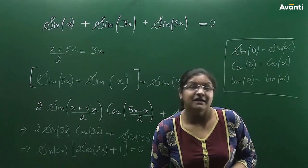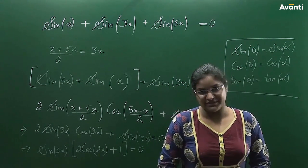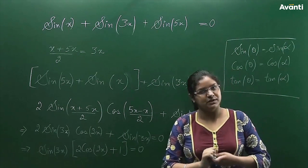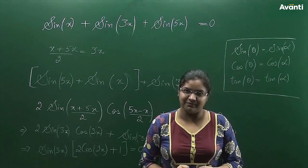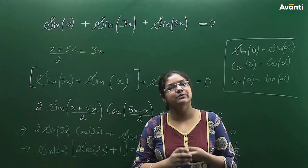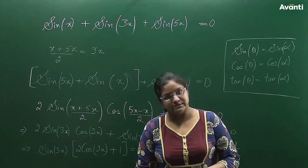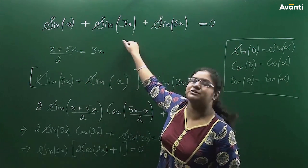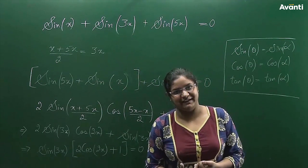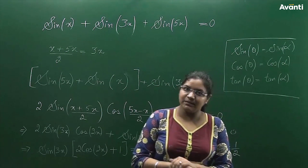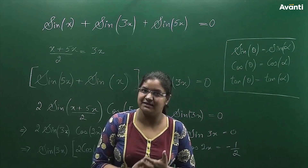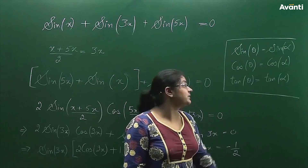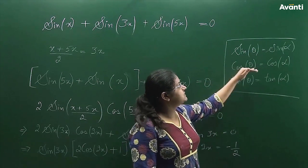Hello everyone. In this question, we have the equation: sin x + sin 3x + sin 5x = 0, and we want to find the general solution — all possible values of x that satisfy this equation. The standard formulas involve two sine or cosine or tan terms, but here we have three terms. So first we will combine two of them.